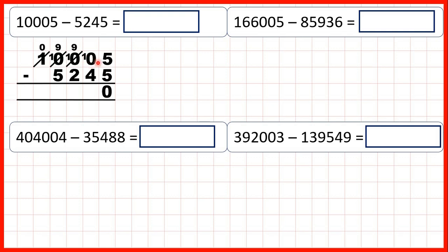So now we have ten minus four, which is six. Nine minus two is seven, nine minus five is four, and zero minus nothing is zero. So our answer is 4,760.